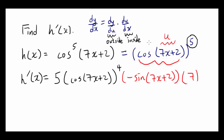To recap: we find the derivative by taking the derivative of the outermost function, multiplied by the derivative of the next inside function, multiplied by the derivative of the innermost function. We considered cosine of 7x plus 2 as u and took the derivative of u to the fifth. Then we considered 7x plus 2 as u, took the derivative of cosine of u, and finished by taking the derivative of 7x plus 2.